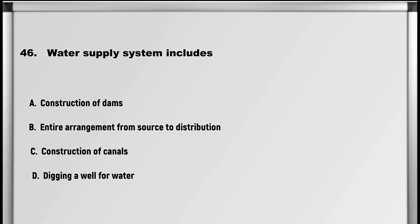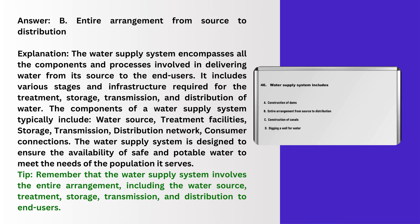Let's move on to question number 46: Water supply system includes: A. Construction of dams, B. Entire arrangement from source to distribution, C. Construction of canals, D. Digging a well for water. Answer: B. Entire arrangement from source to distribution.